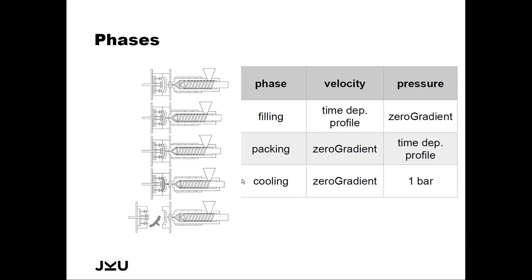Additionally, since there are different phases, we do not want to stop the simulation to switch between them — we want to run one simulation. So we implemented a system where the solver knows when to switch between different conditions. In the filling phase we have a time-dependent profile for the velocity and a zero-gradient pressure at the inlet. When certain conditions are met, the velocity boundary condition switches to zero gradient and the pressure switches to a time-dependent pressure profile. In the cooling phase the velocity remains zero gradient and the pressure is switched to one bar.